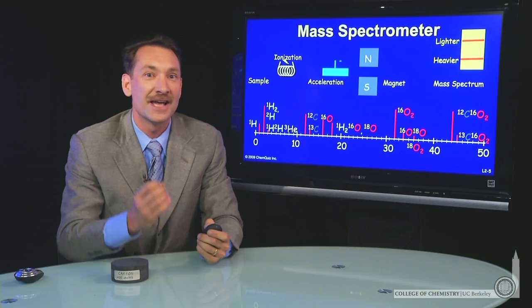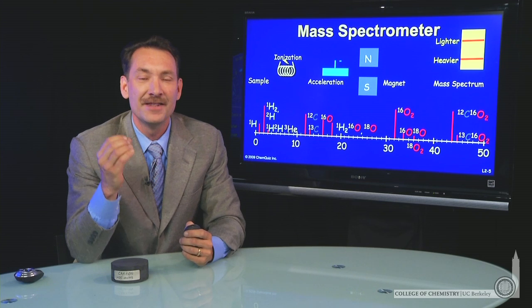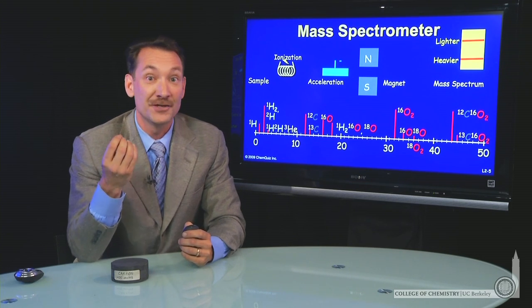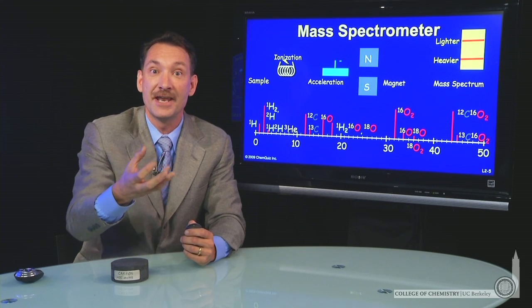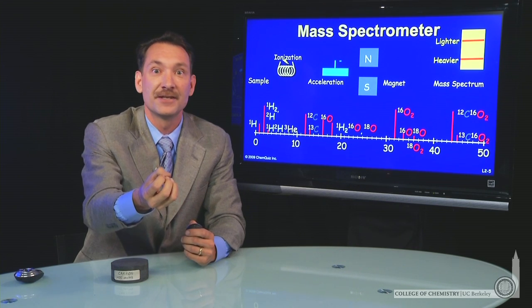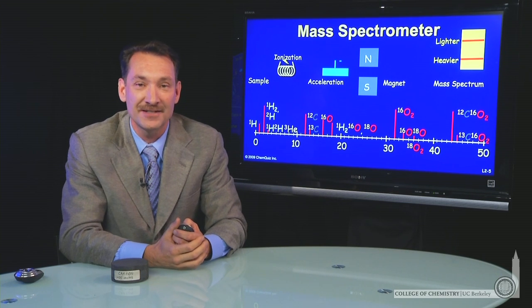So a mass spectrometer is exquisitely sensitive to mass. It's so sensitive to mass that you can determine, by using a mass spectrometer, mass lost during chemical reactions. And the energy output that's due to relativistic mass loss, the E equals mc squared mass loss, can be determined by modern mass spectrometers.